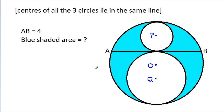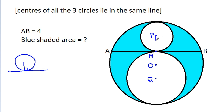In any circle, the radius and tangent are perpendicular to each other. Suppose this point is M, then PM will be perpendicular to AB, and also QM will be perpendicular to AB.